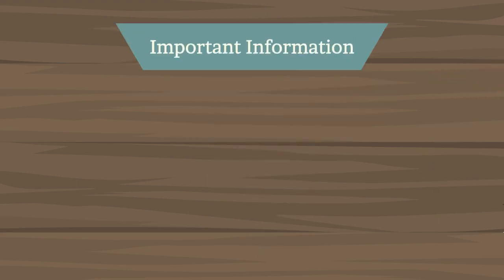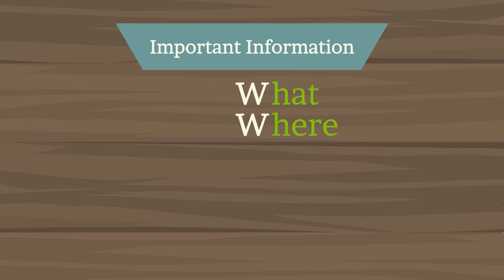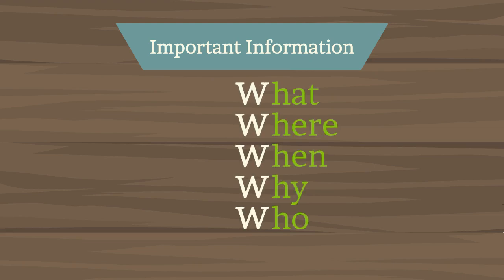The first component is the important information about the rest of the article. It uses the information regarding five W and H — which are what, where, when, why, who, and how — to draw the attention of the reader.